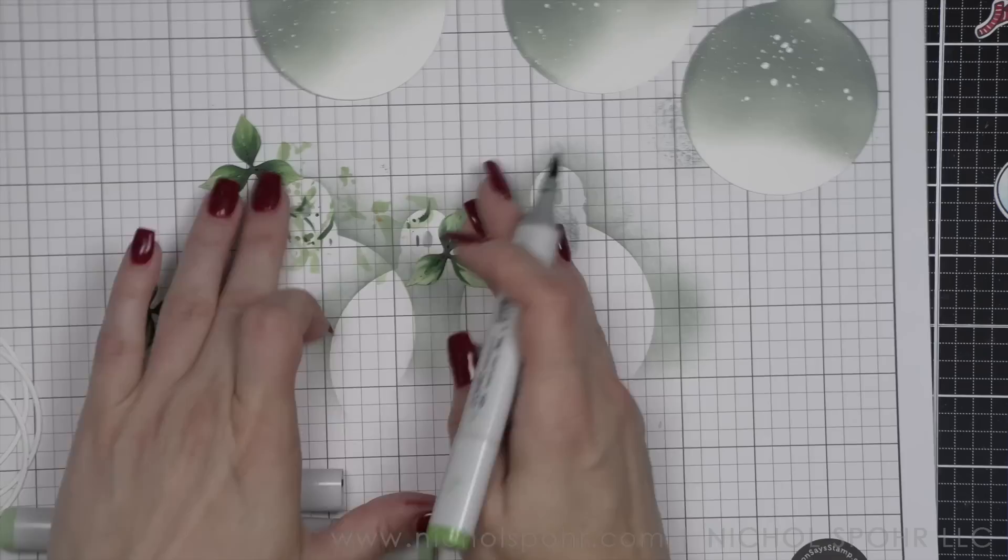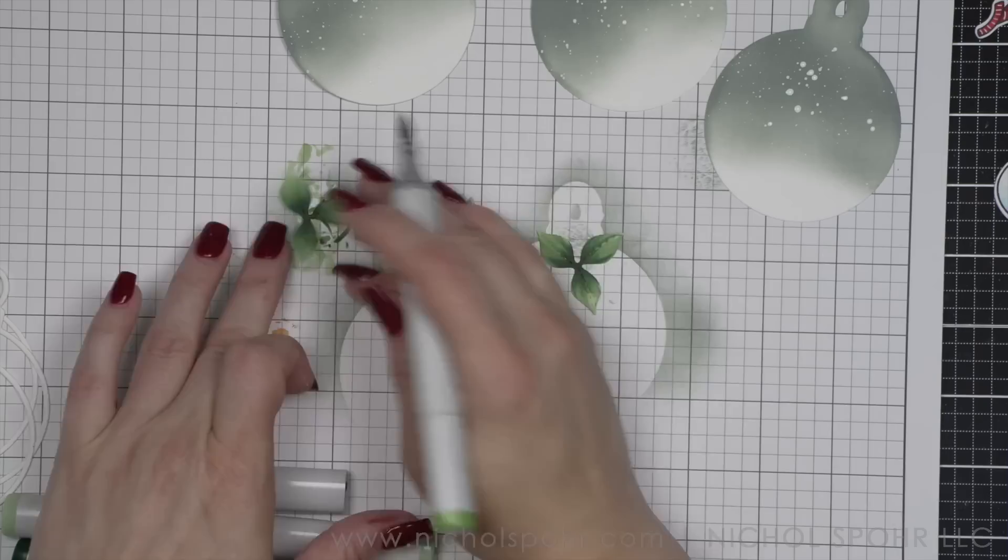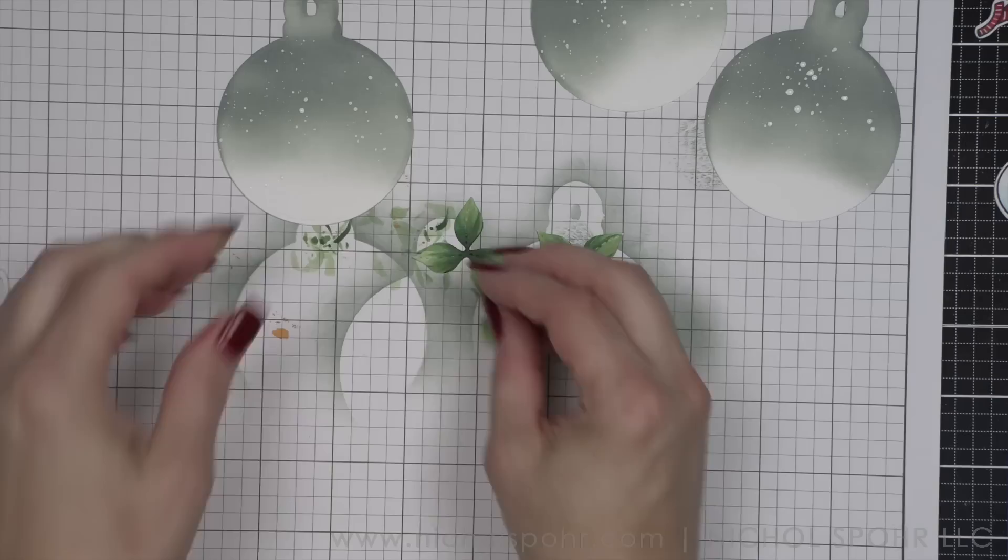This is a really great stamp die combo, or you can get them individually. It's called Ornament Options from Simon Says Stamp and CZ Designs. So Kathy designed this. It's really cool. I love it.